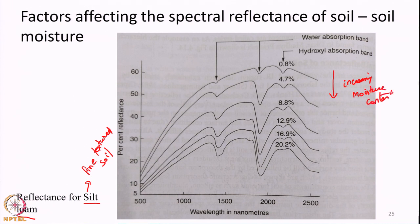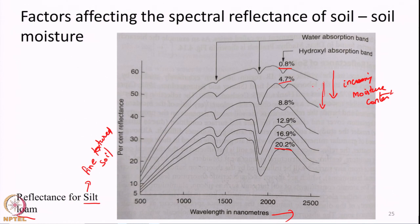As moisture content increases, the reflectance in general decreases — the entire curve goes below. These curves are not intersecting; they are falling one below the other. So overall, in all wavelengths, the reflectance will go down as the moisture content increases.